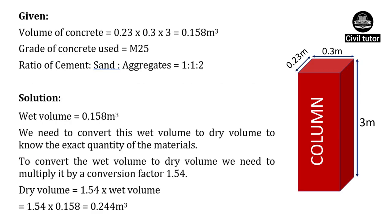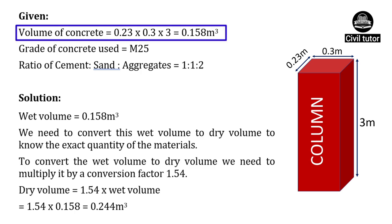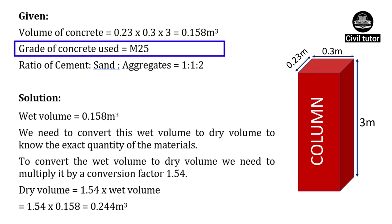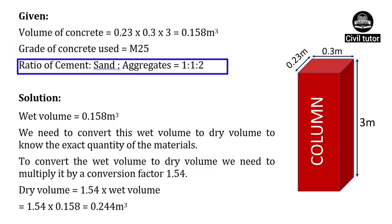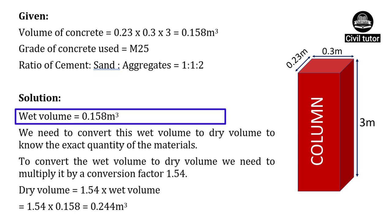Let's solve an example to make it more clear. Suppose we need to calculate the quantity of materials required for a column of size 0.23 m × 0.3 m with a height of 3 m, using M25 grade of concrete. Volume of concrete equals area of cross section into height, i.e., 0.23 × 0.3 × 3, giving 0.158 meter cube. For M25, the ratio is 1:1:2, and wet volume equals 0.158 meter cube.